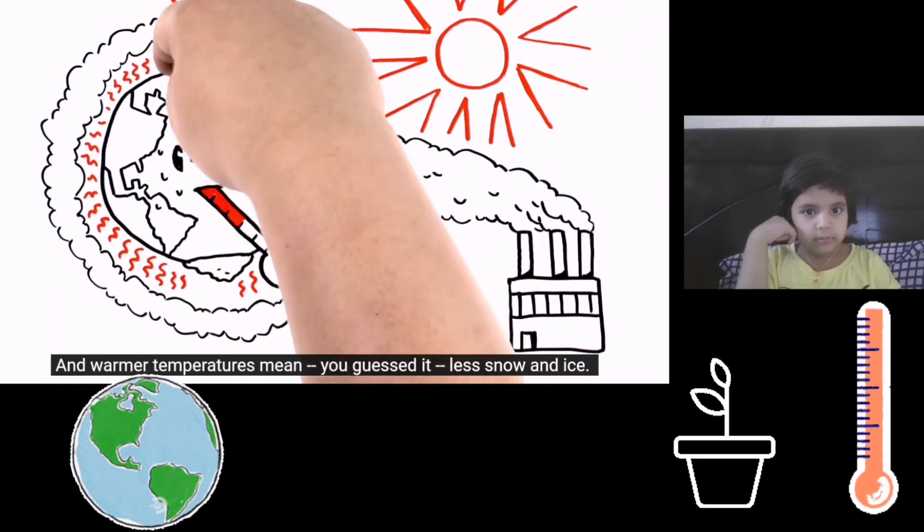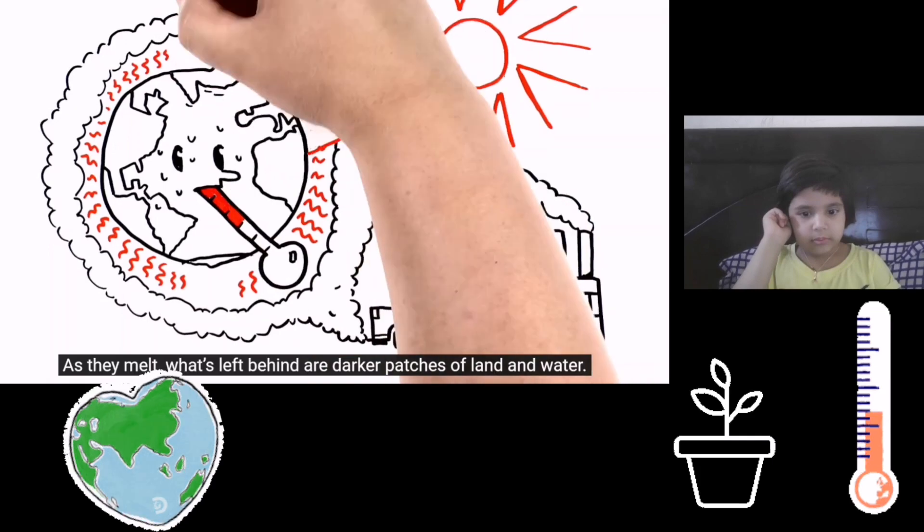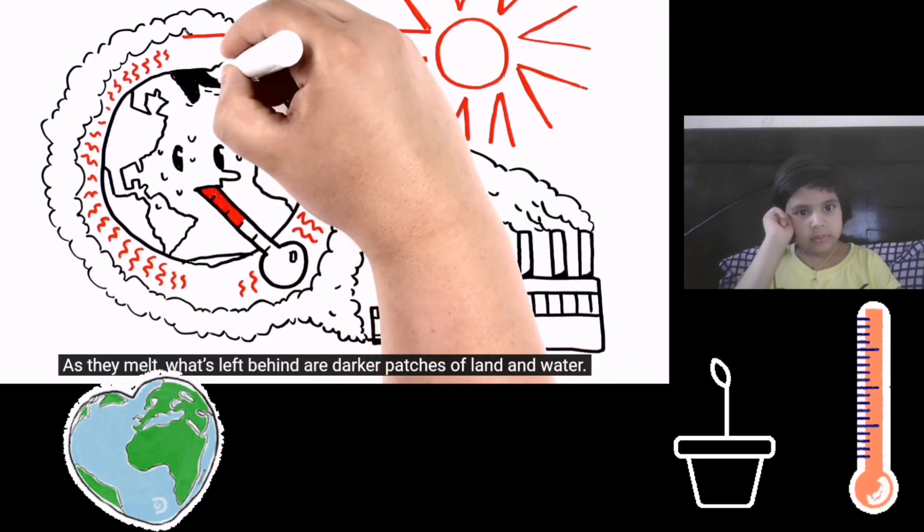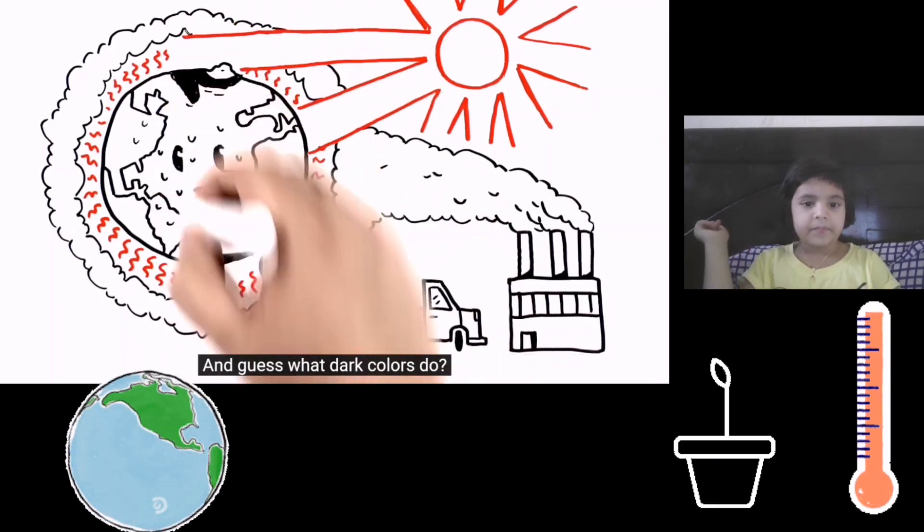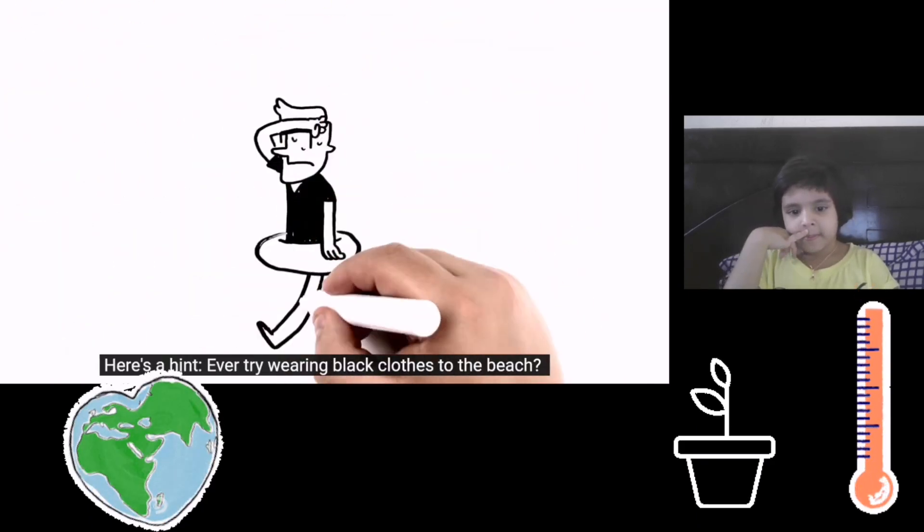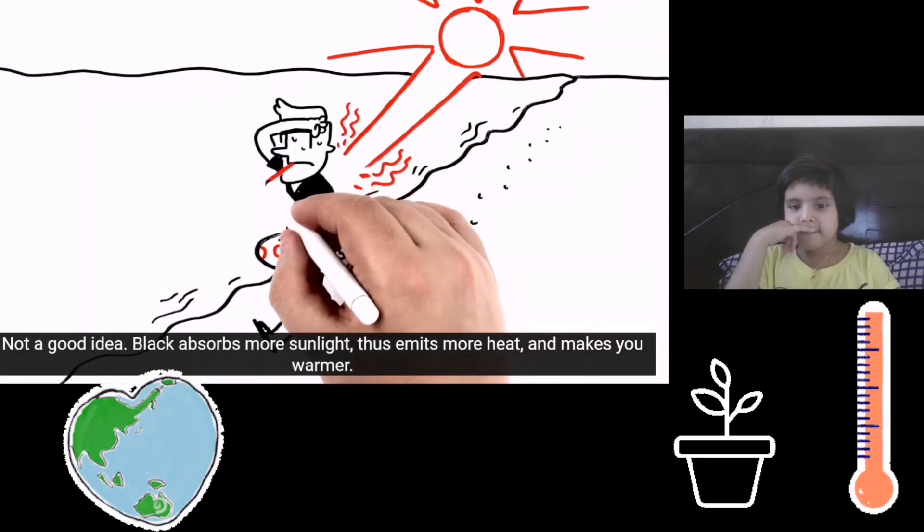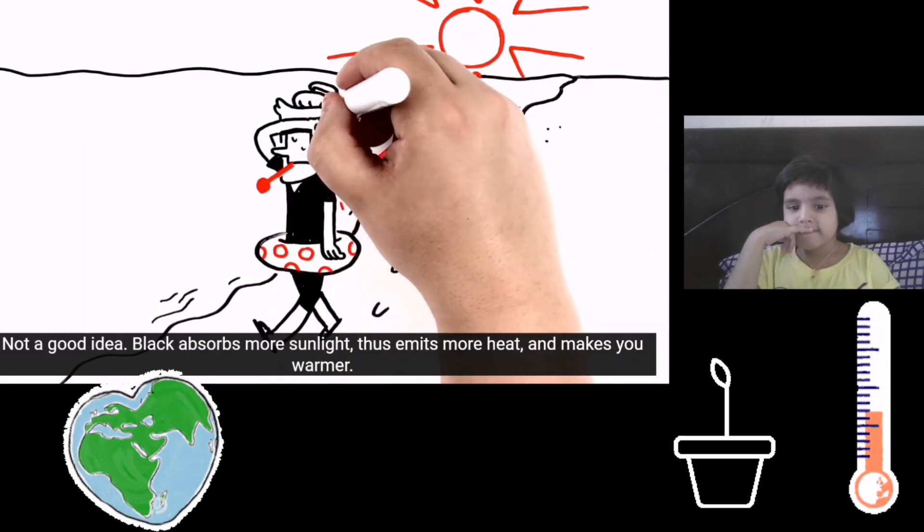And warmer temperatures means, you guessed it, less snow and ice. As they melt, what's left behind are darker patches of land and water. And guess what dark colors do? Here's a hint. Ever try wearing black clothes to the beach? Not a good idea! Black absorbs more sunlight, thus emits more heat and makes you warmer.